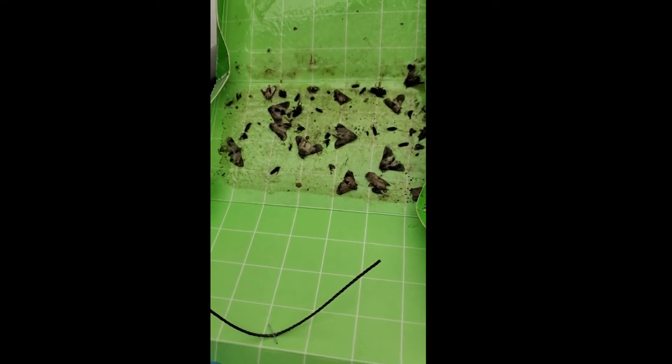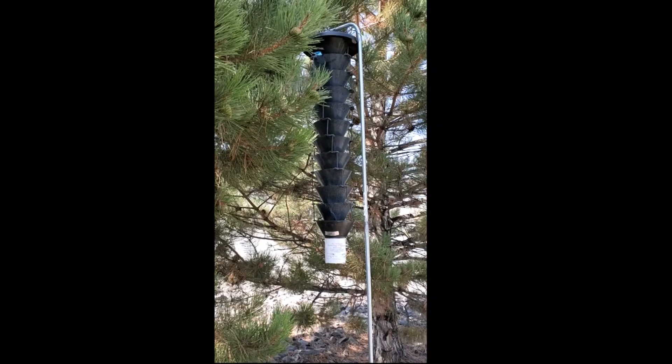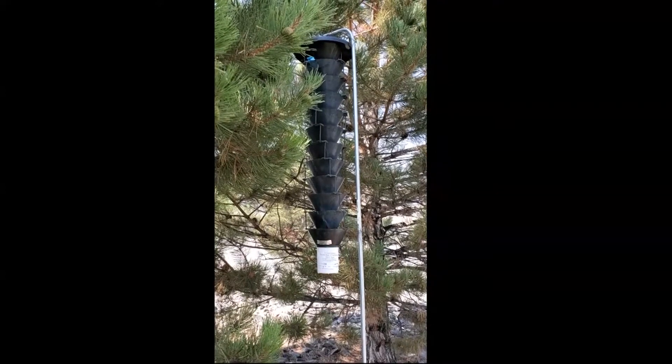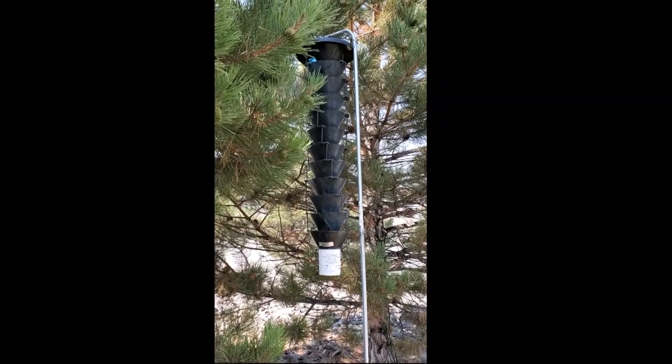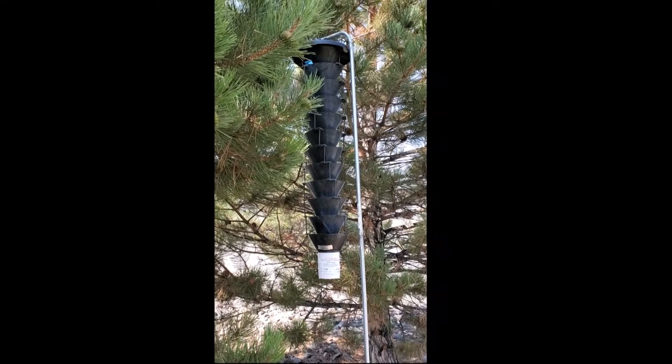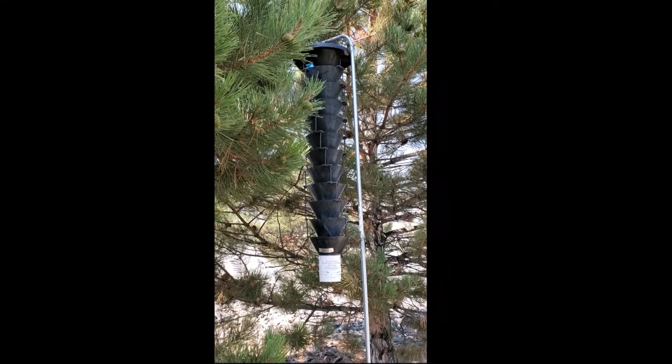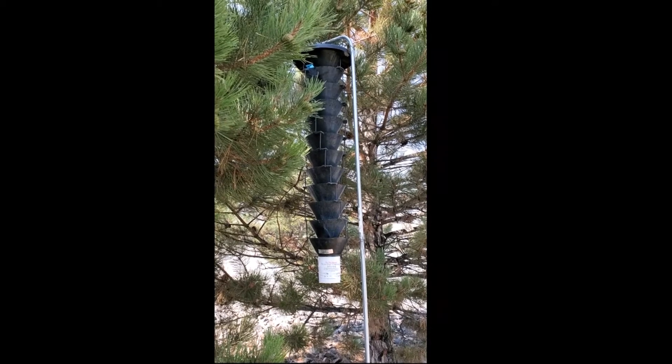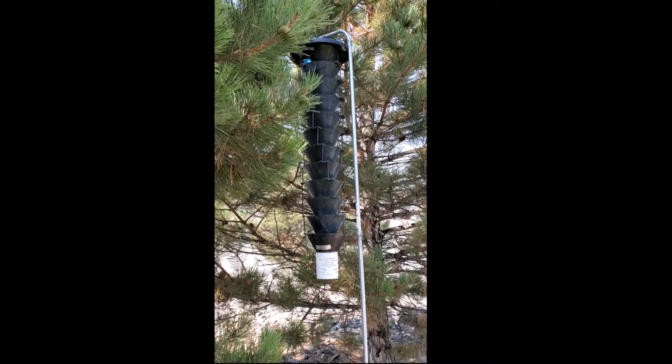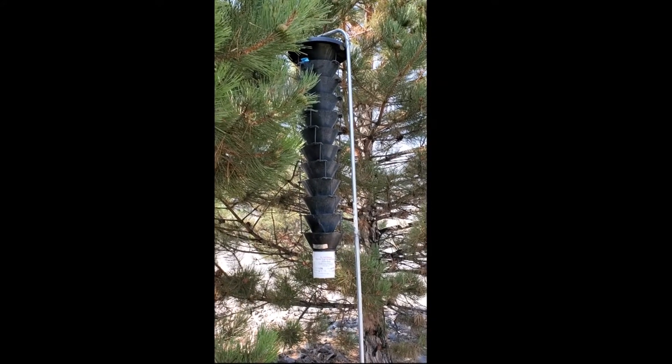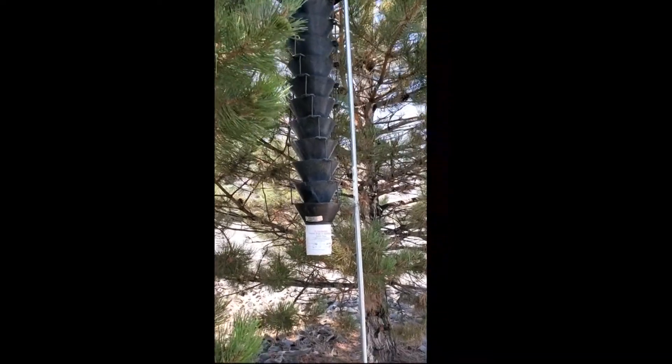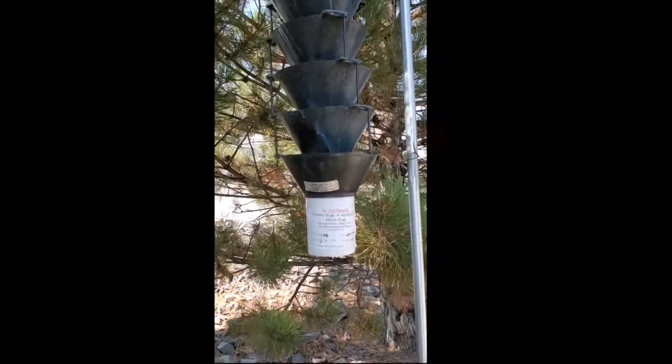This is an exotic woodbore trap or bark beetle trap. These traps kind of look like a trunk of a tree. We then put various chemicals or lures on the trap. You can see the little blue bag up at the top. These attract the insects. The insects then fly in, hit the funnels and fly down to the collection cup at the bottom.